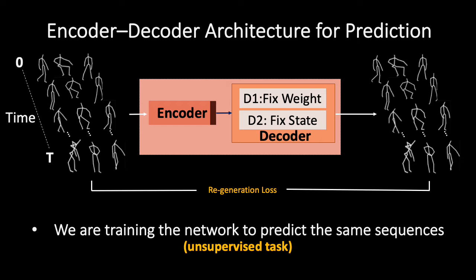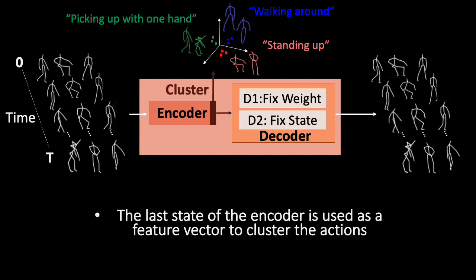The network is trained to predict the same sequences, which is an unsupervised task. This makes the hidden states of the encoder cluster the actions.